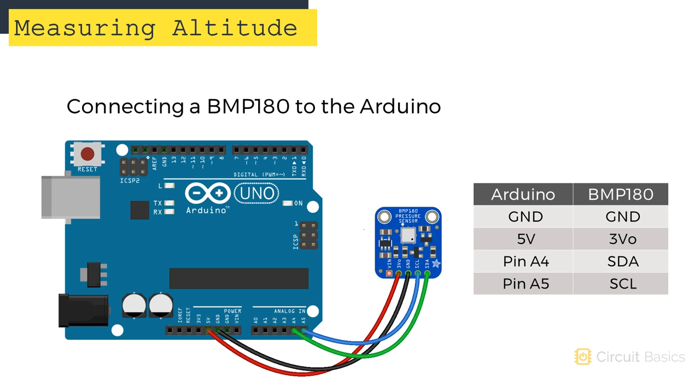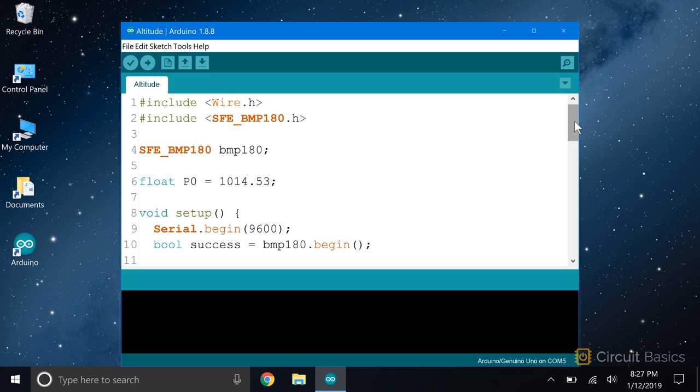Okay, now let's look at an example sketch that outputs the altitude of the sensor from sea level or from the ground. Most of this sketch is identical to the sketch we saw in the barometric pressure and temperature video. We still need to include the libraries and create a BMP180 object.